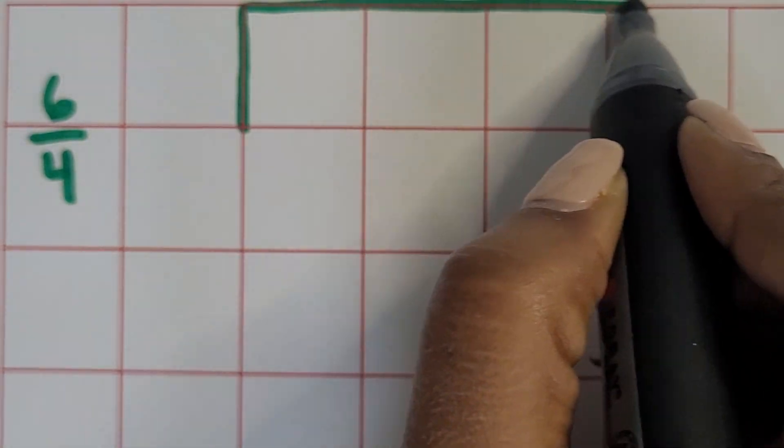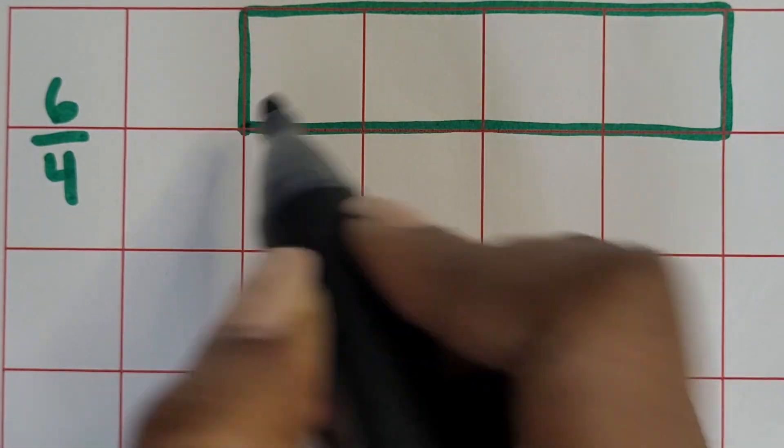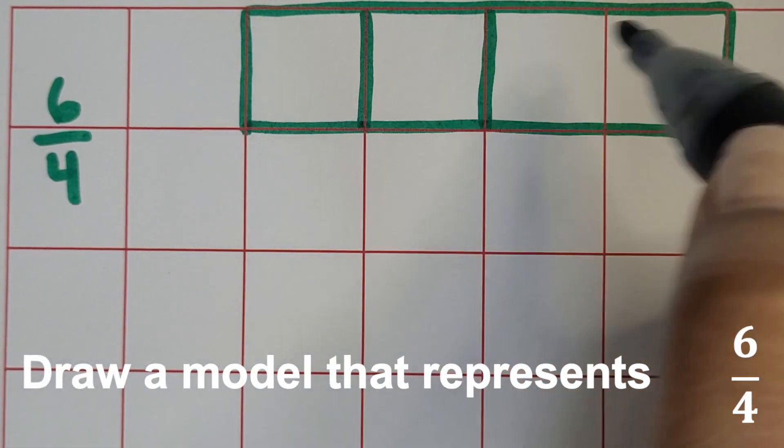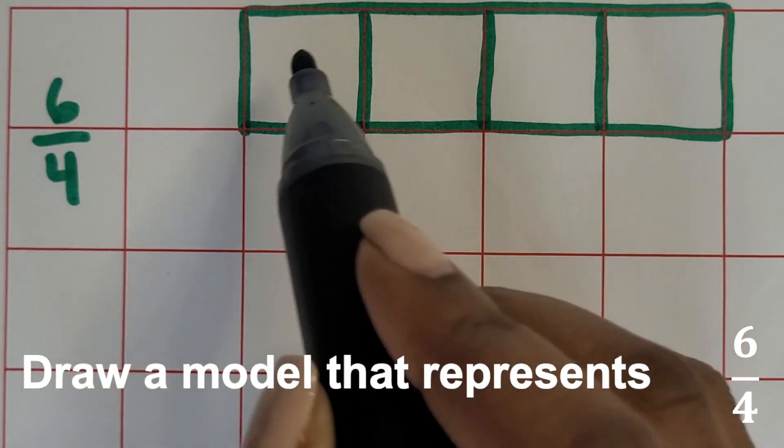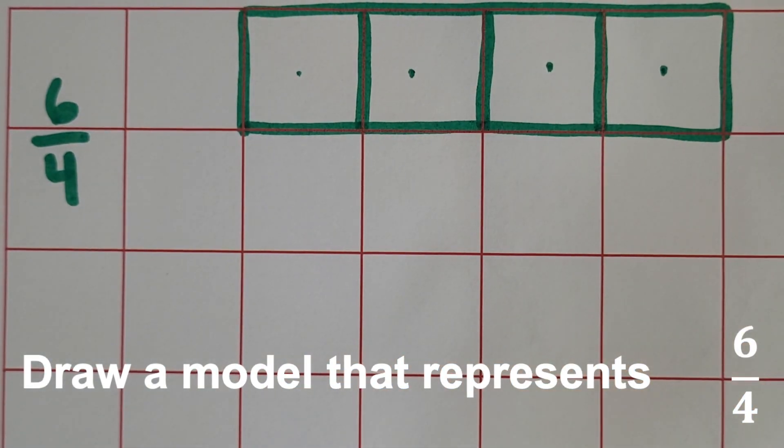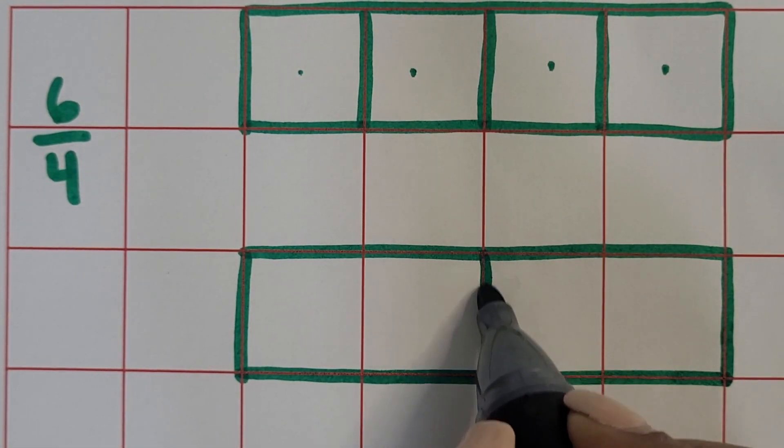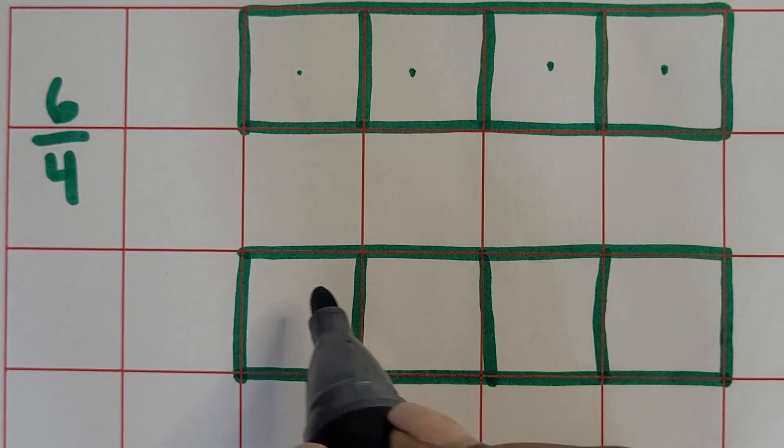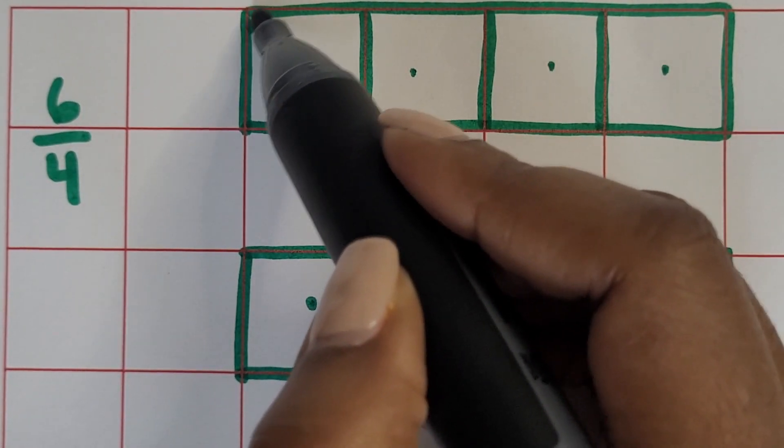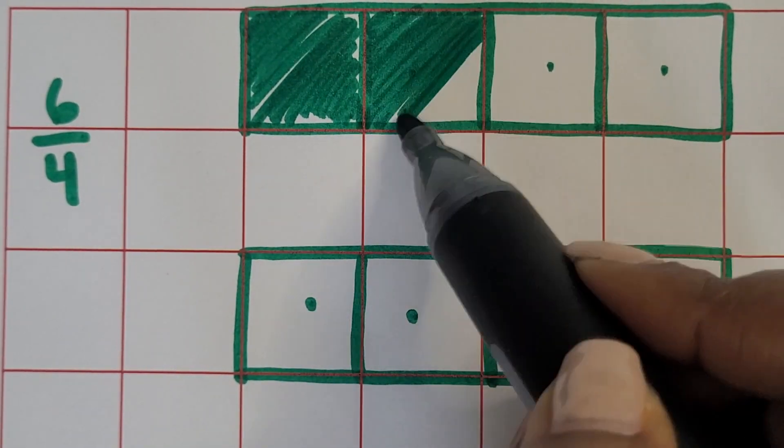Let's move on to an improper fraction or fraction greater than one. We're drawing six-fourths, so we know one whole is going to have four-fourths. Now we need to make another whole for another two-fourths so that we have a total of six-fourths. There's eight-fourths altogether, but we only need to shade in six-fourths.